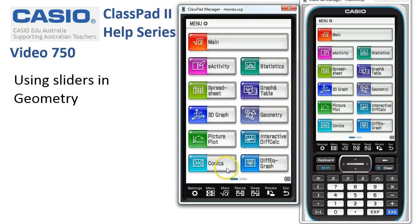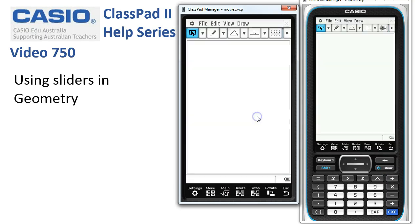Using sliders in geometry. We'll open the geometry app and if you haven't already, tap file new to clear the work surface. Now let's just pop in a triangle to explore what sliders can do for us in geometry.